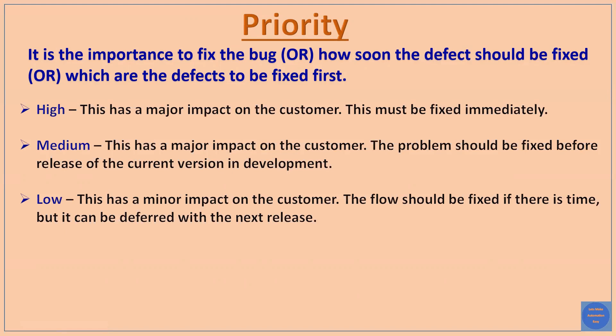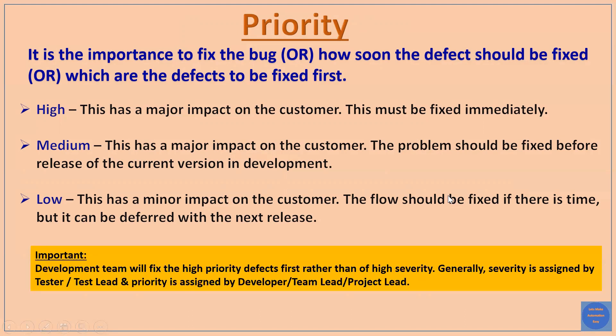There are three priority categories: high, medium, and low. High means this has a major impact on the customer and must be fixed immediately. Medium means the problem should be fixed before the release of the current version. Low means it has a minor impact and can be deferred to the next release if there is no time.